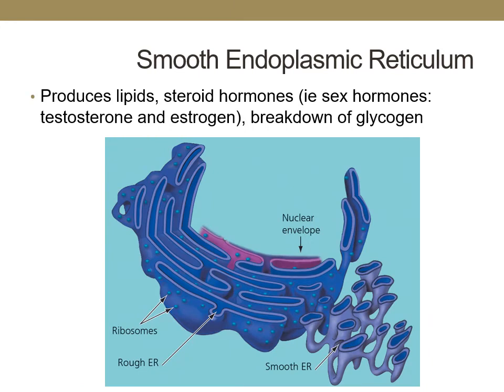The smooth endoplasmic reticulum is smooth because it does not have ribosomes associated with its surface. It is responsible for the production of lipids and steroid hormones like testosterone and estrogen. You will find lots of smooth endoplasmic reticulum in liver cells because they aid in breaking down glycogen into glucose molecules that cells can use for energy.